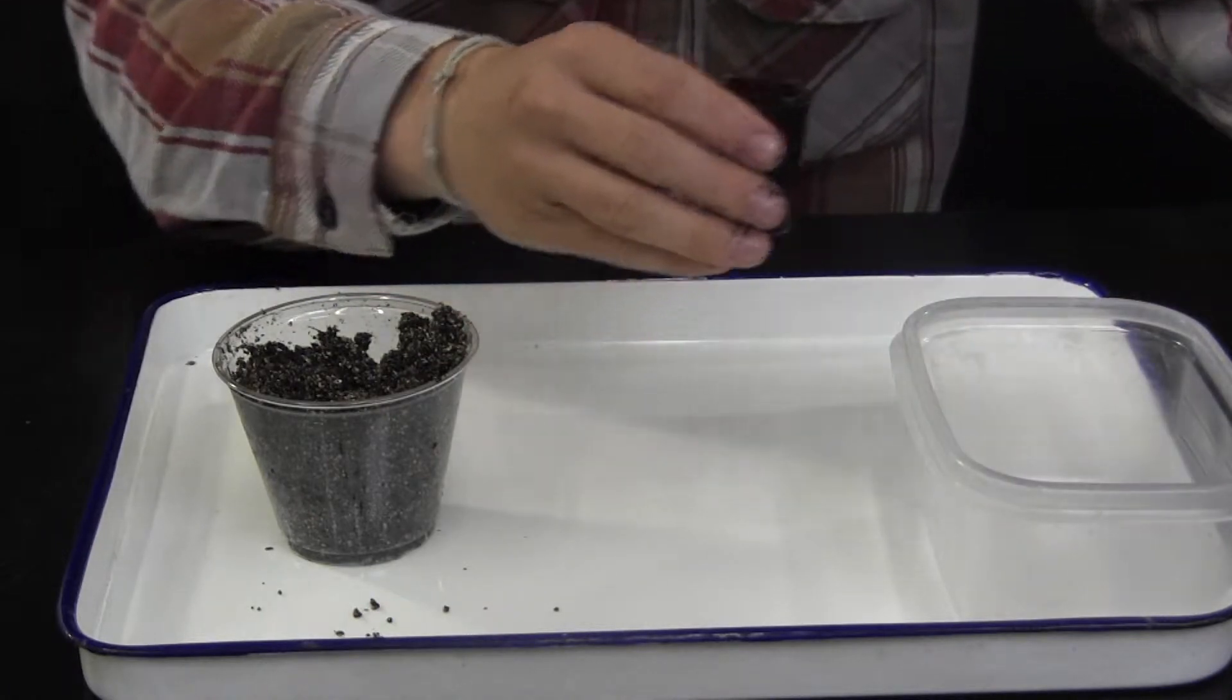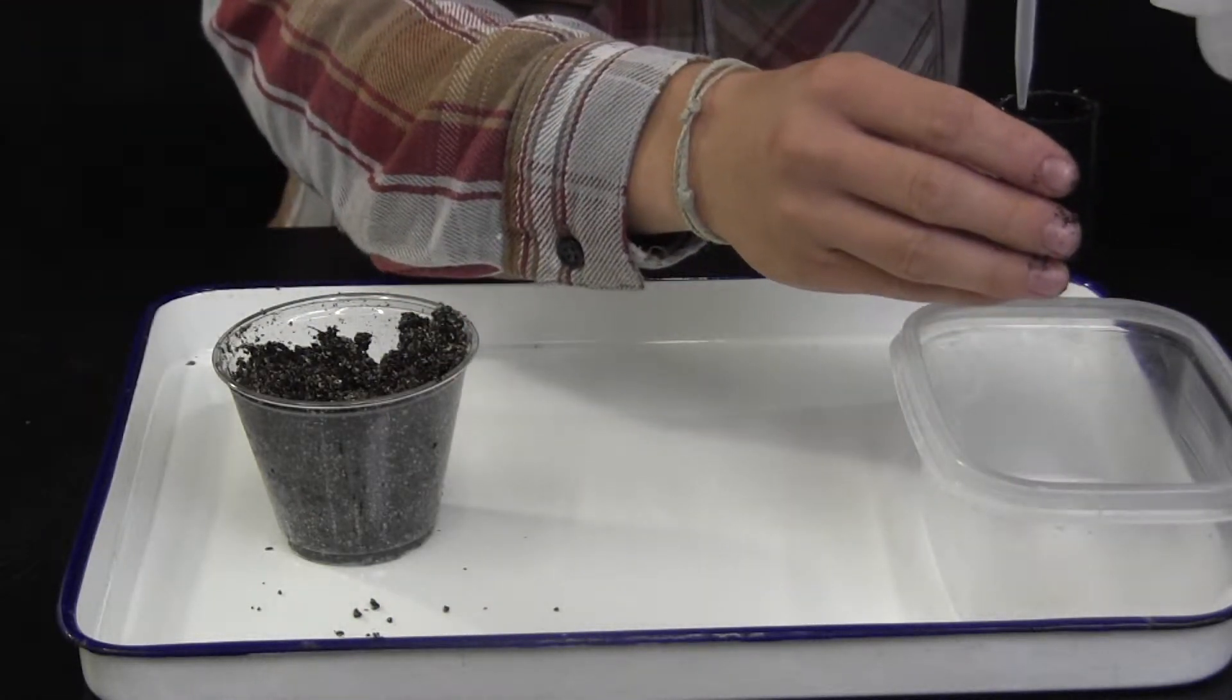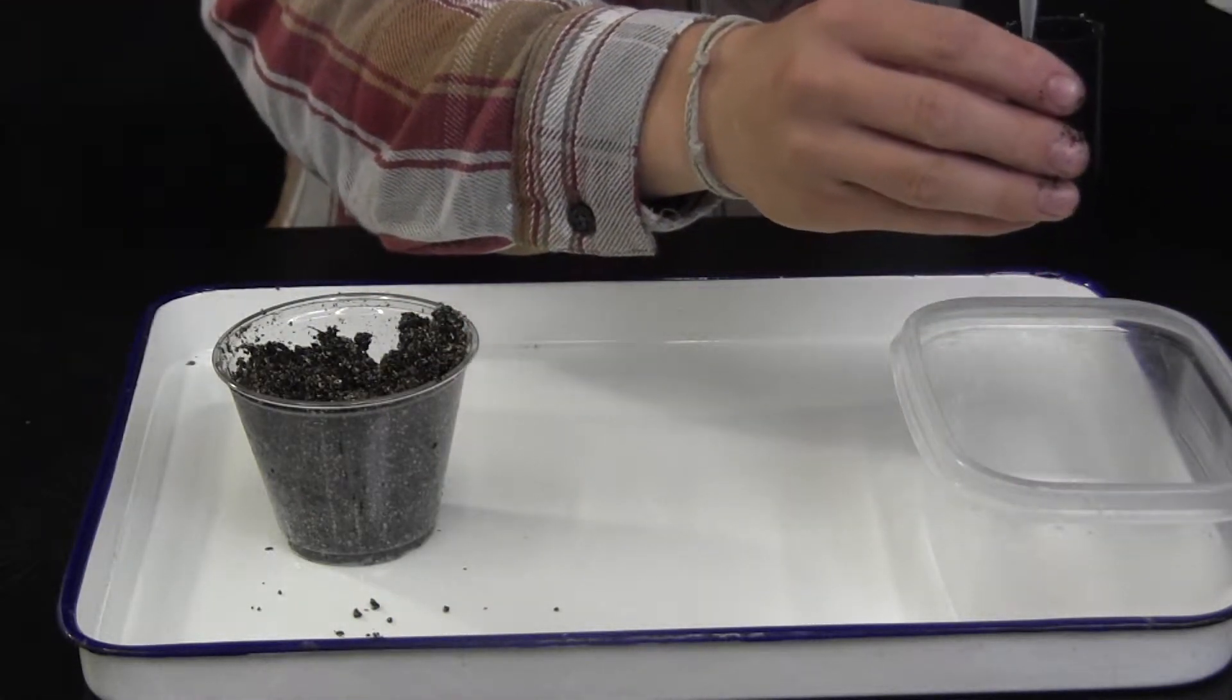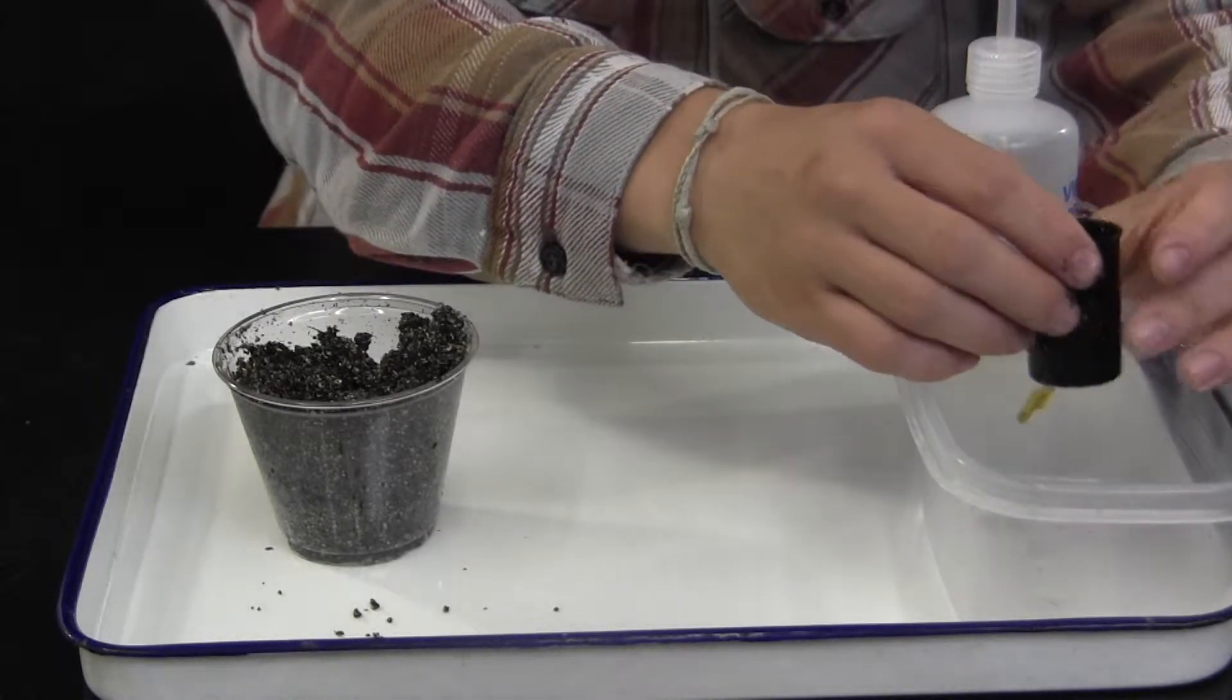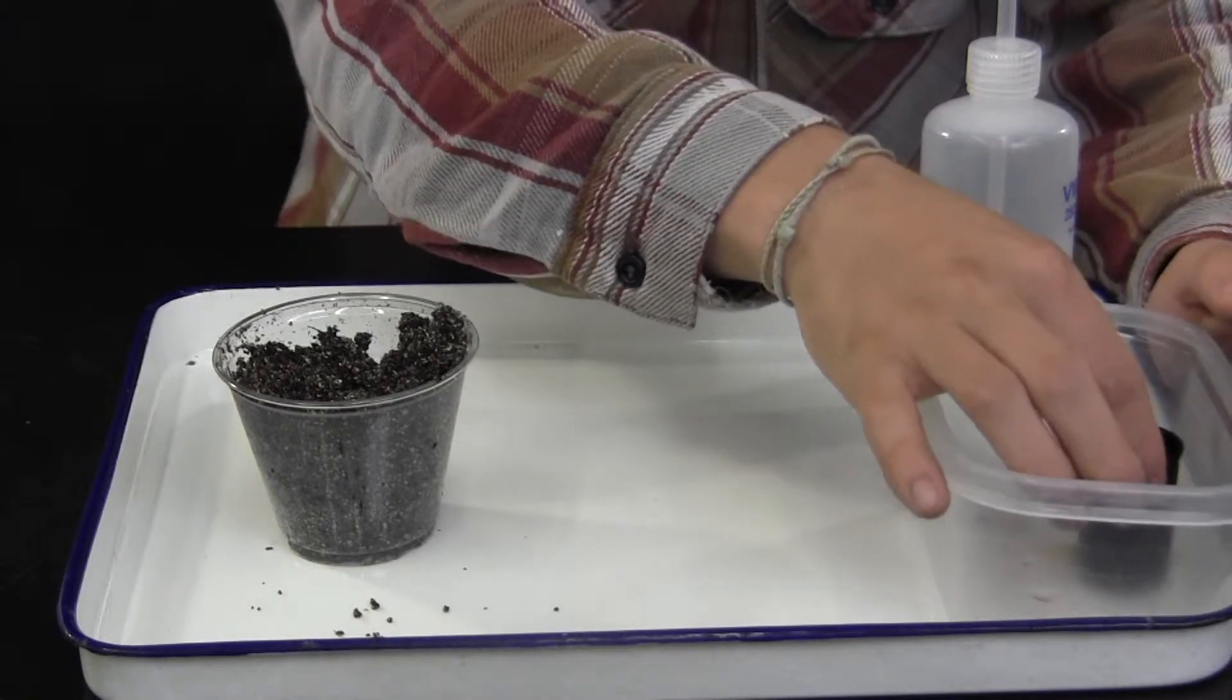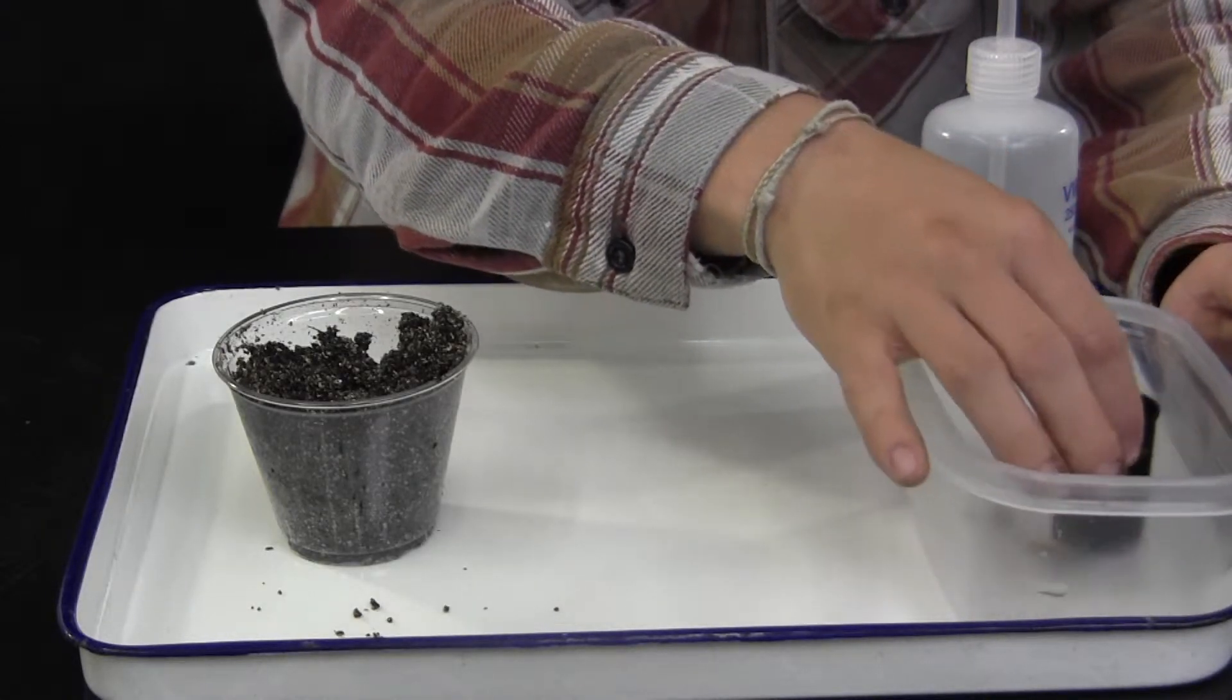To avoid this, lightly tamp the medium and then allow water to percolate through the medium in the container. If water does not drain out of the canister, use your forceps to open the drainage hole slightly. This percolation will settle the mix a bit more.